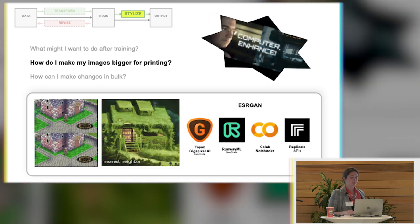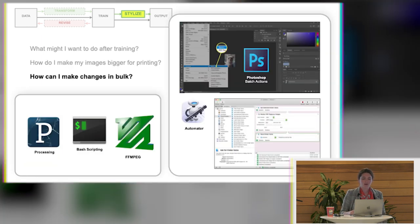There's such a thing called ESRGAN. Which is a GAN that specifically has learned to upscale things. So you actually can now enhance using the computer. Like they do in sci-fi movies. Lots of resources. Code and no code for doing that. And as I mentioned before. Photoshop batch actions are really great for bulk changes.